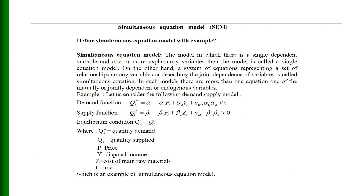A simultaneous equation model is one in which there is a single dependent variable and one or more explanatory variables — that model is called a single equation model. On the other hand, a system of equations representing a set of relationships among variables describing the joint dependence of variables is called a simultaneous equation model. In such models there are more than one equation with mutually or jointly dependent endogenous variables.